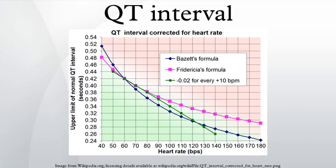In cardiology, the QT interval is a measure of the time between the start of the Q wave and the end of the T wave in the heart's electrical cycle. The QT interval represents electrical depolarization and repolarization of the ventricles. A lengthened QT interval is a marker for the potential of ventricular tachyarrhythmias like Torsades de pointes and a risk factor for sudden death.